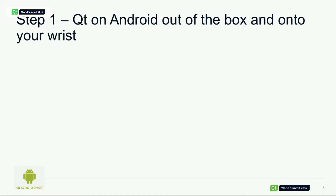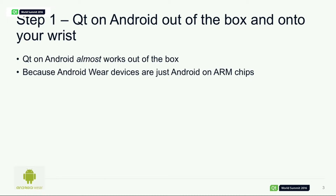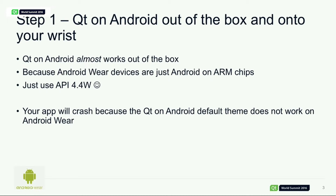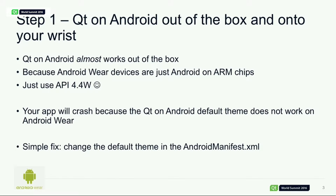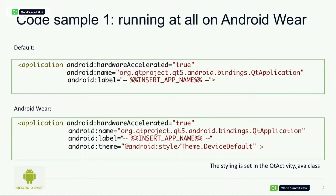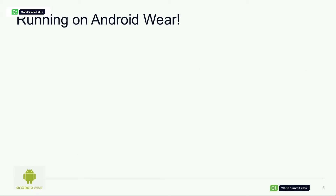The first thing to do — you've got your Qt application and you're getting ready to run it on your smartwatch, and it almost works. Android Wear is basically just Android running on an ARM chip, much the same as a regular Android smartphone. So really all you need to do is use API 4.4W, which is the Android API for Android Wear. Unfortunately, the Qt default theme does not work on Android Wear and your app will crash. It's pretty easy to get around — a simple fix. We just change the default theme in the Android manifest. At the top we have the default Android manifest XML file; you change the theme to the device default and you have an app which will run on Android Wear.